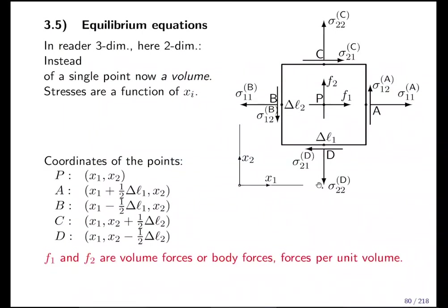This defines the stresses on the right end — stress σ₁₁ on the right, σ₁₂ shear stress on the right — and σ₁₁ and σ₁₂ on the left. Before, we were only giving stresses on one side and ignoring the other face. Now we need both sides because stress is a field: it depends on position, and the stress at point P will be slightly different from the stress at point A, B, C, or D.